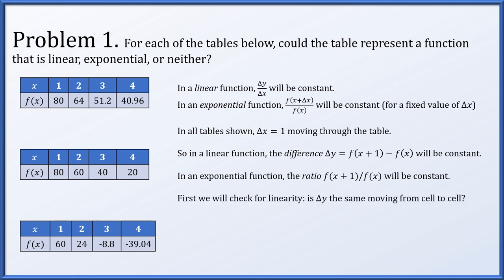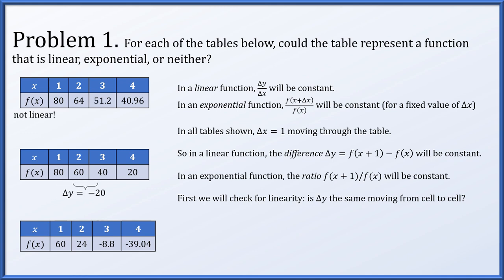First let's check linearity. In each table, we'll compute a bunch of delta y's — are they always the same or not? In the first table, we have a difference of 16; however, the next difference is not 16, so this is definitely not a linear function. In the second table, we have a difference of negative 20, and here negative 20, and here also negative 20. Since delta y is constant, this is a linear function. In the last table, we compute a delta y of negative 36, and the next is not negative 36, so this is not a linear function.